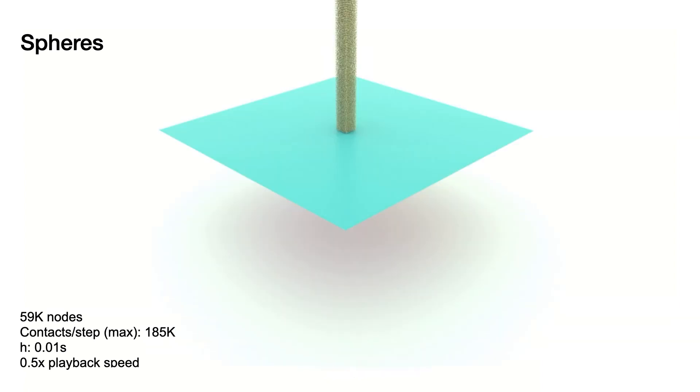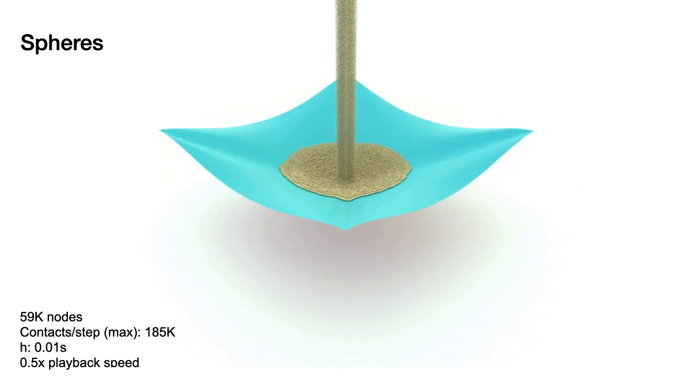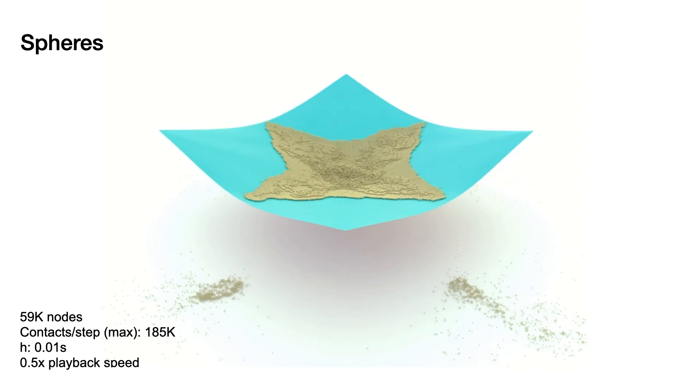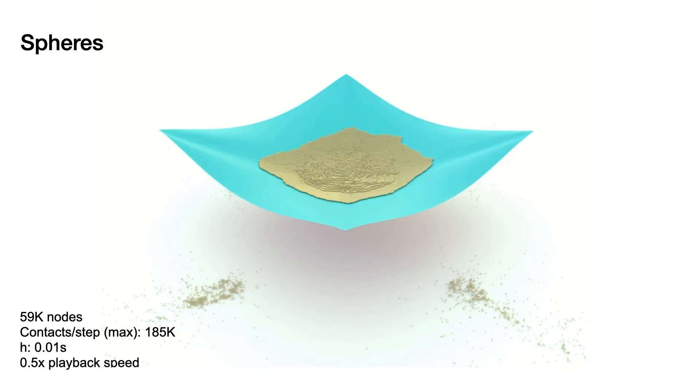In the extreme, we can even simulate ball bearings by treating individual vertices as particles with strict thickness. Here we drop a tower of 50,000 particles and capture tight spherical packings and granular flow. IPC guarantees that sphere thicknesses never intersect with one another nor pass through the cloth.